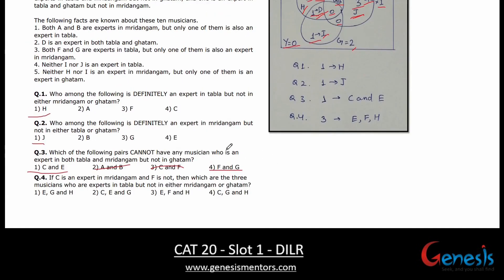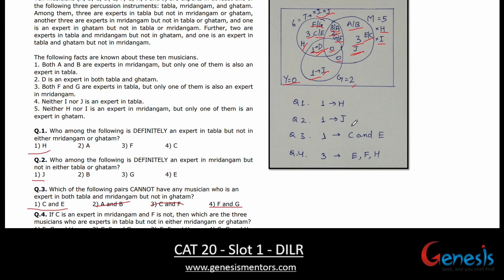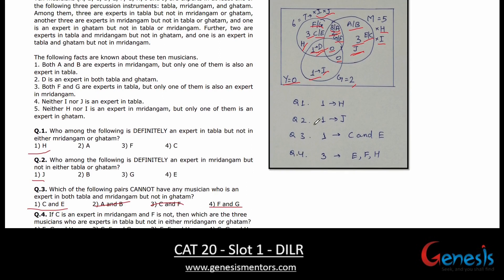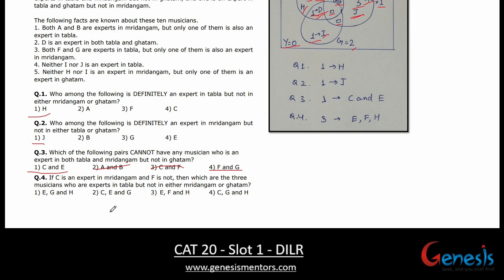Question 4: If C is an expert in M and F is not an expert in M — then C goes to only-M, which means E goes to only-T. Since F is not in M, F goes to only-T and G goes to T∩M. So the three musicians in only-T (expert in T but not M or G) are H, E, and F.